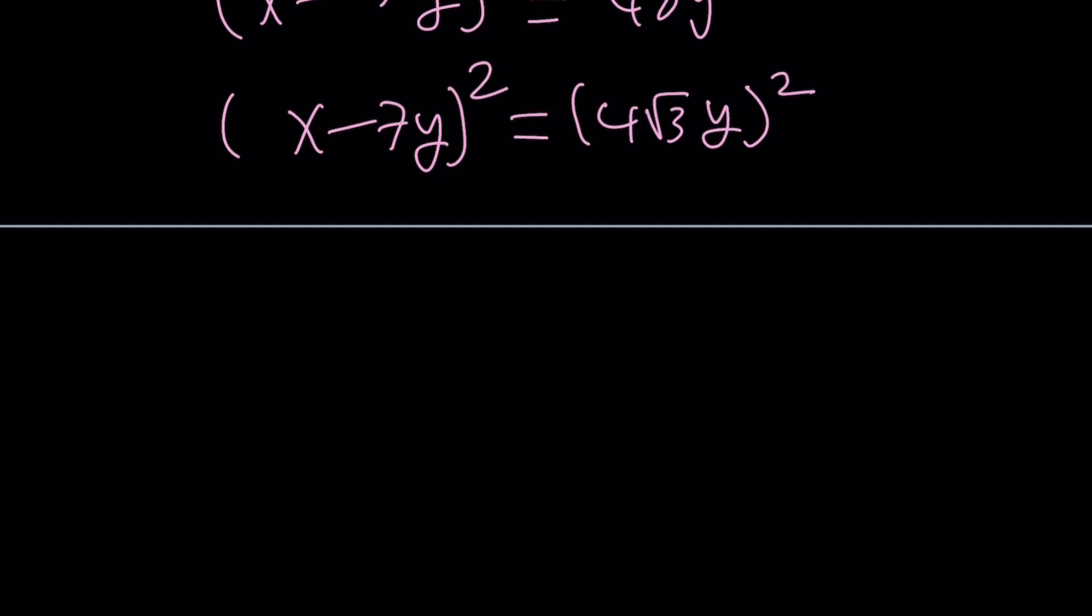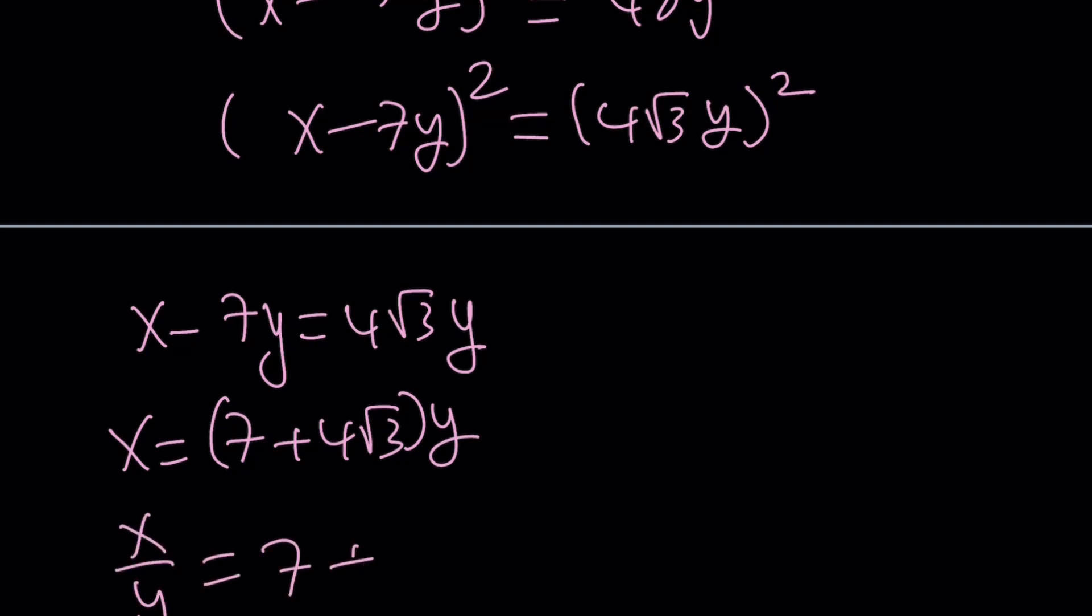Now, if a squared equals b squared, this means two things. Either a is equal to b or a is equal to negative b. So we're going to have to consider both. That gives us two solutions as before. So from here, we get x equals 7 plus 4 root 3 times y. And from here, x over y becomes 7 plus 4 root 3.